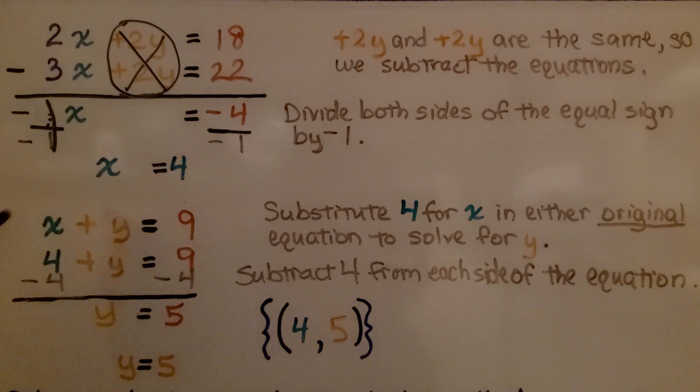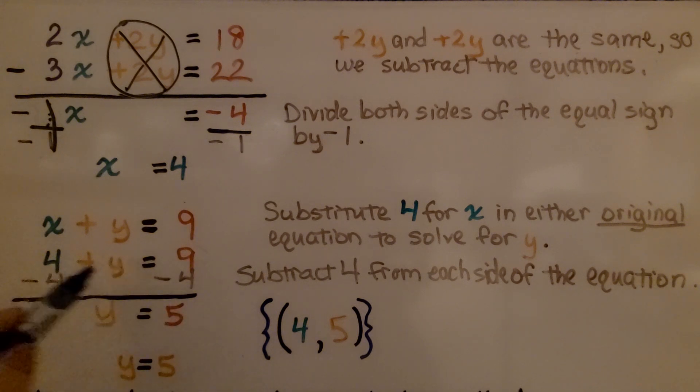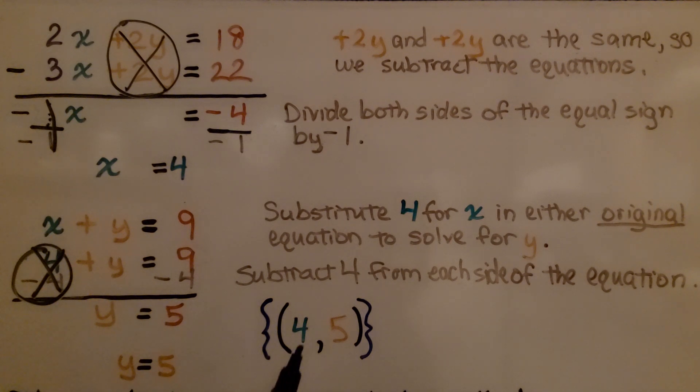We substitute 4 for x in either original equation to solve for y. I chose the easy one with no coefficients. We have 4 plus y equals 9. We subtract 4 from each side of the equation, and we get a zero pair here. We have y equals 9 minus 4, which is 5. We know y equals 5, and our solution is 4 for x, 5 for y.